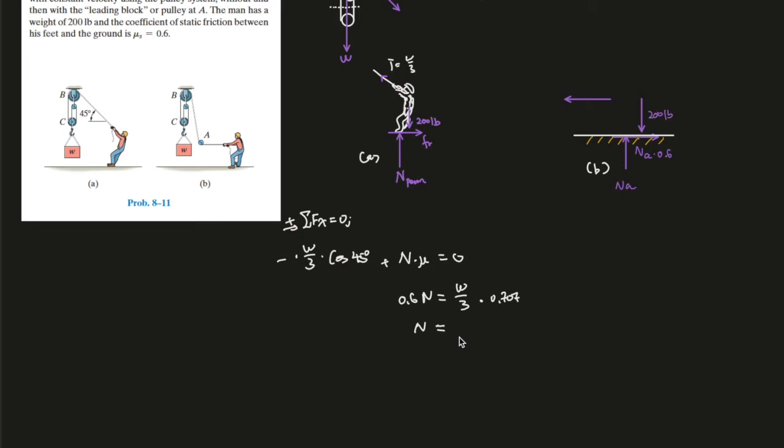And looking at the second equation, which is going to the y direction, sum of the forces going to the y direction, going up as the positive y direction equals to zero. Therefore, W/3 times sine of 45, and plus the normal force and minus the 200 pounds give us zero.